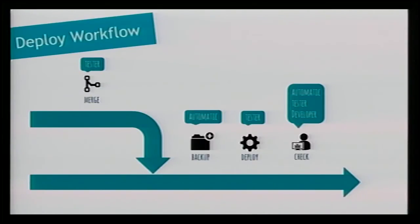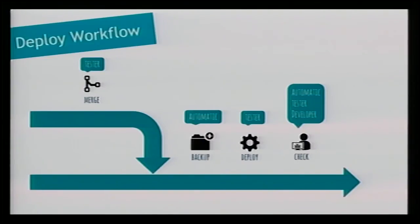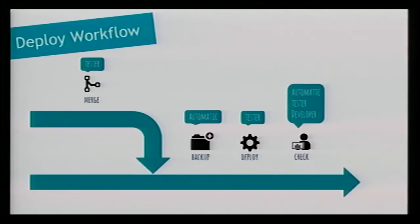When the tester sees that it's working correctly from the business point of view and there are no errors, the tester merges the branch - goes to GitHub and clicks the green merge button. If it's a grey button it has to be rebased, so they ask the developer to make a rebase. When it's merged, we automatically back up the production database, we deploy. The tester clicks just one button to deploy and then we have the feature on production.